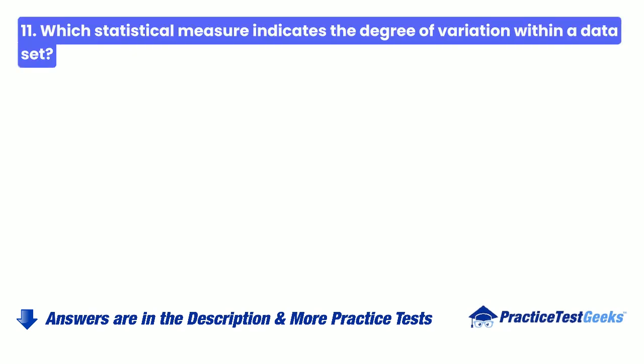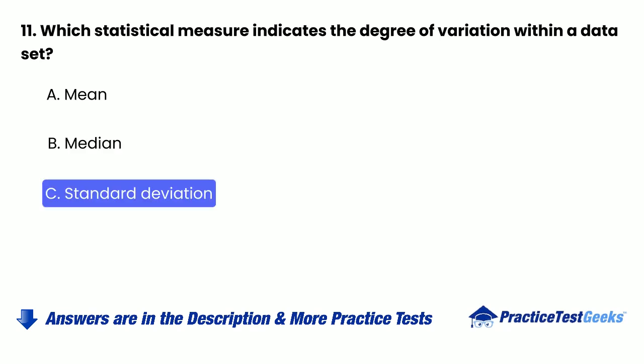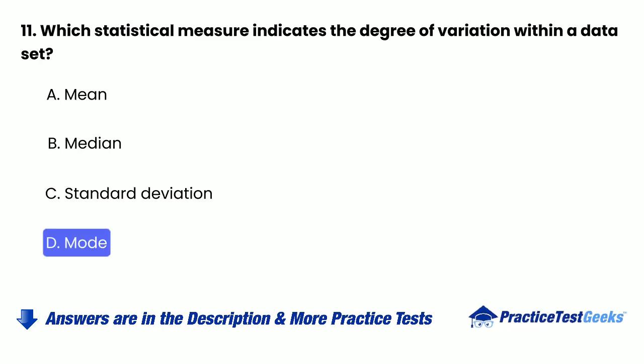11. Which statistical measure indicates the degree of variation within a data set? a. Mean. b. Median. c. Standard deviation. d. Mode.